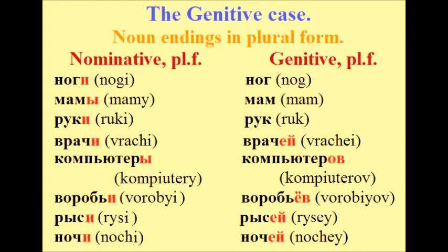Now let's look at how the noun endings in plural form will change in genitive case. Feet — Ноги → Ног. Moms — Мамы → Мам. Hands — Руки → Рук. Doctors — Врачи → Врачей. Computers — Компьютеры → Компьютеров. Sparrows — Воробьи → Воробьёв. Lynx — Рыси → Рысей.